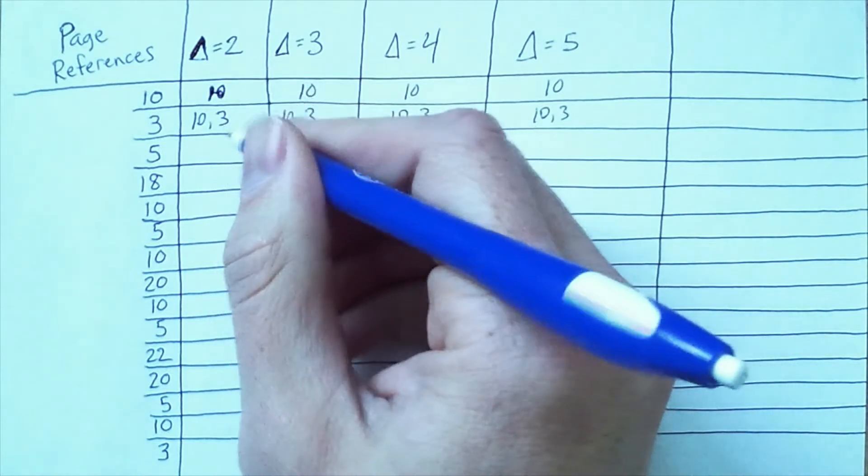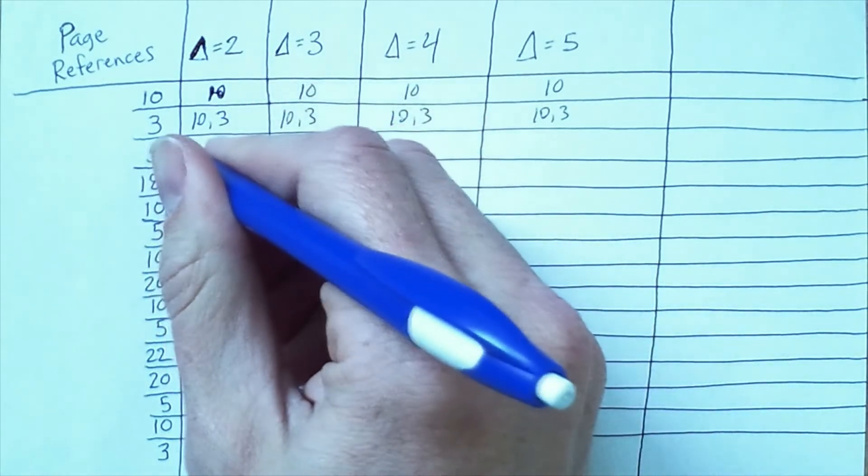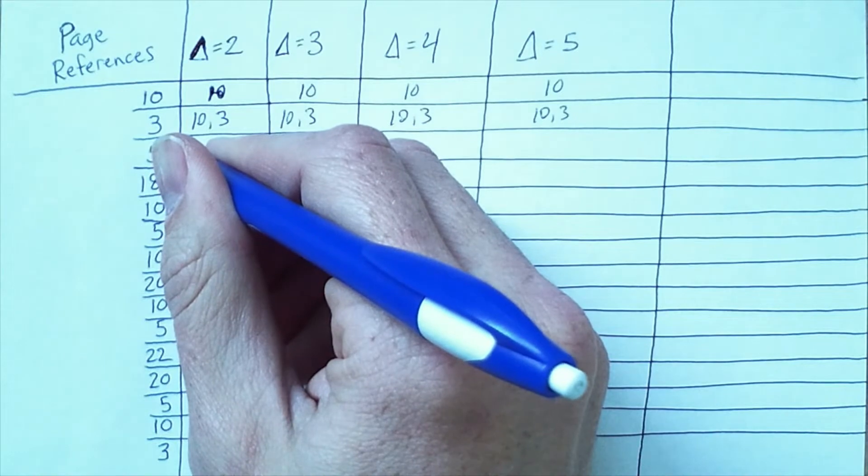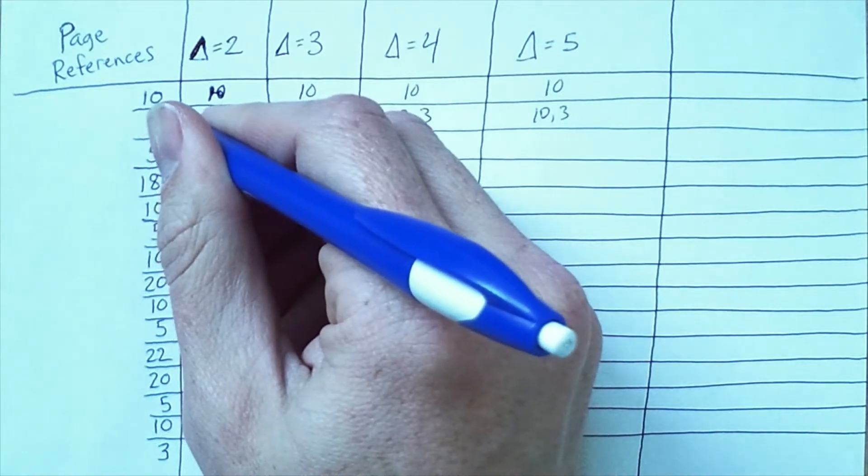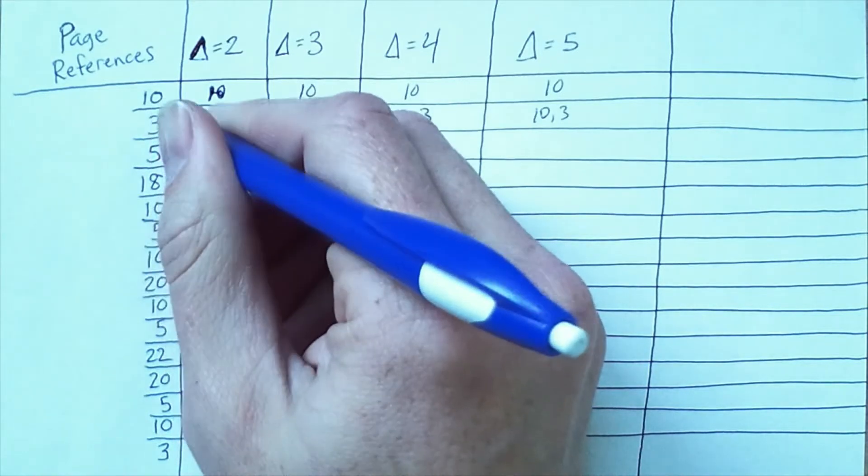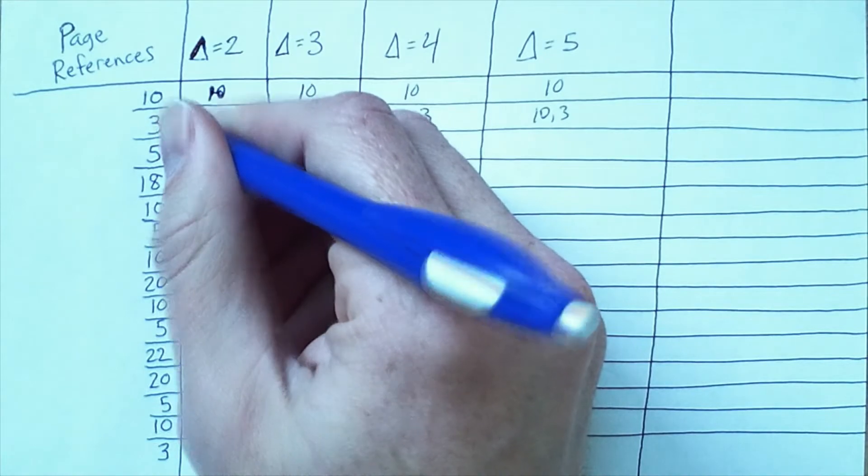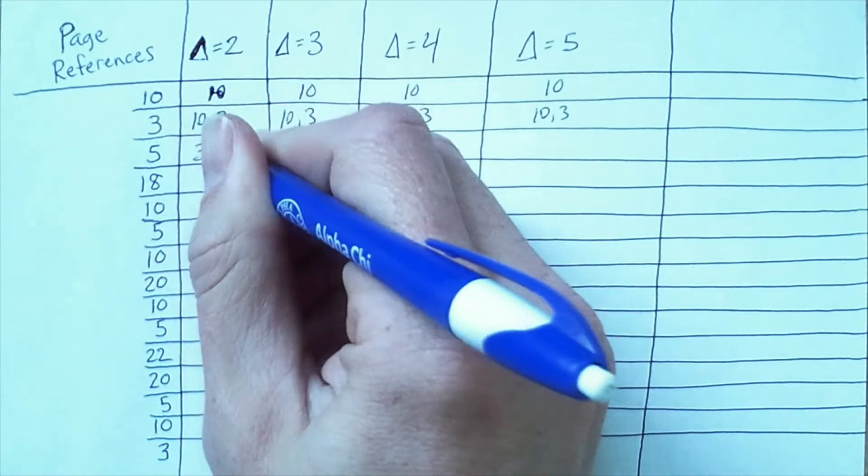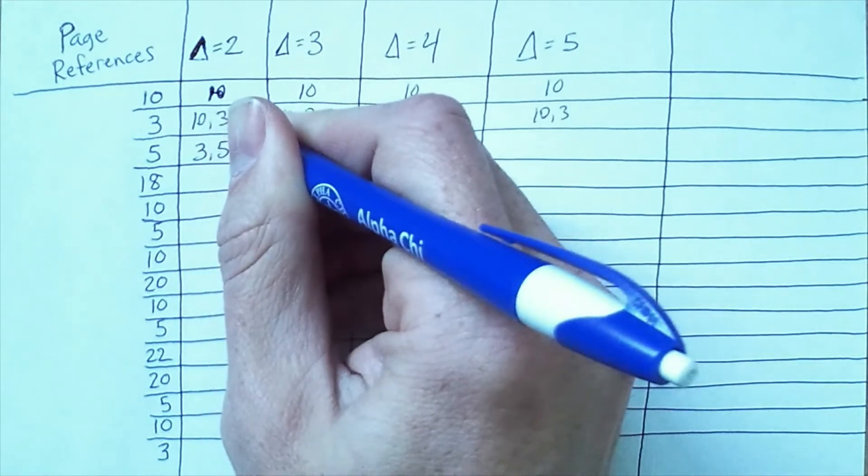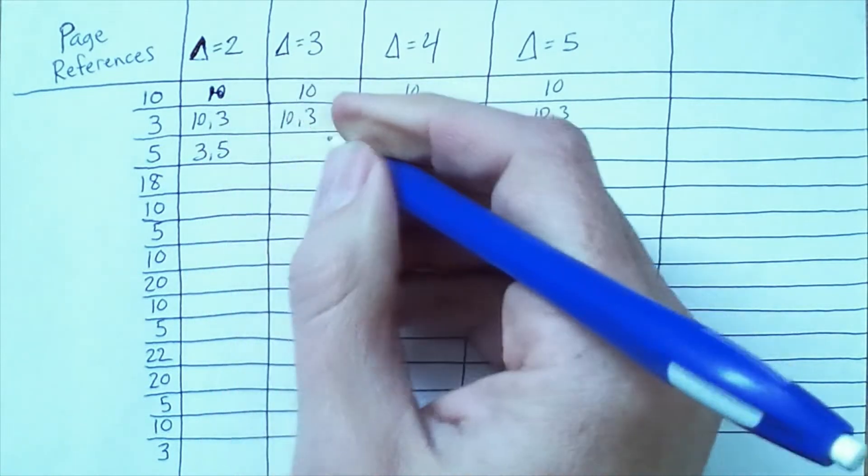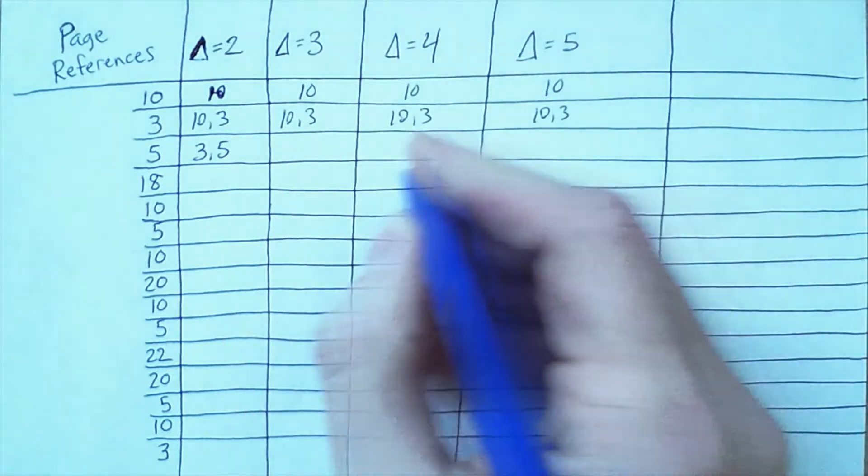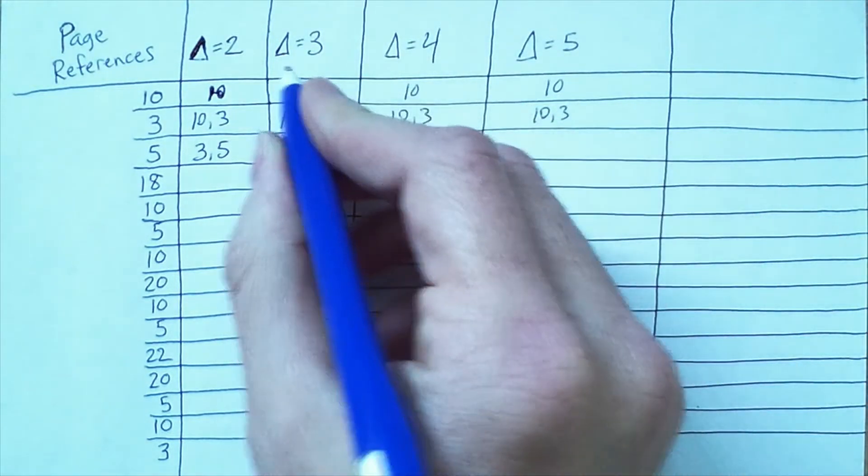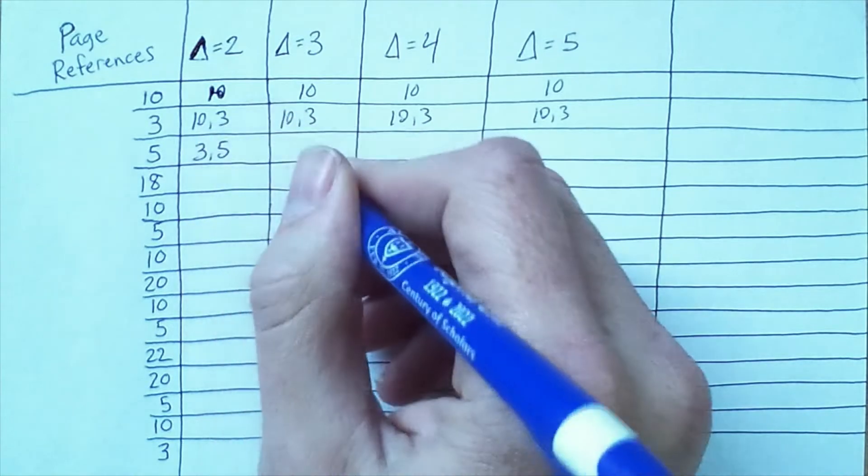Initially our working set is empty, and as we access pages we'll add them to the set. And so initially we'll add 10 to all of these for all different sizes of delta, and then we reference the next page.